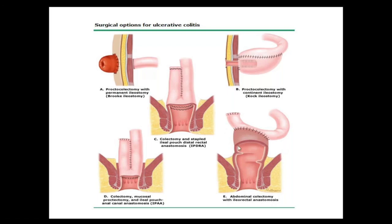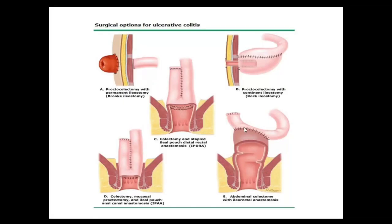Total colectomy with ileorectal anastomosis is considered for patients who don't want pelvic dissection, have mild rectal disease, and are willing for long-term surveillance. The rectum is spared and can be managed medically with suppositories or enemas. However, these patients are at risk for future relapse of ulcerative colitis in the retained rectum, and if malignancy develops there, complete removal with a permanent stoma becomes necessary. Patients must be warned of this risk before ileorectal anastomosis.